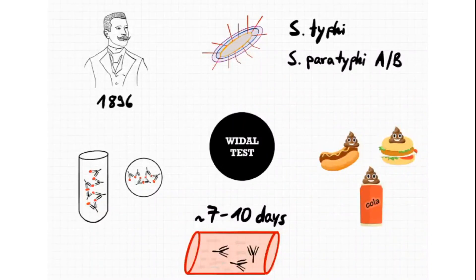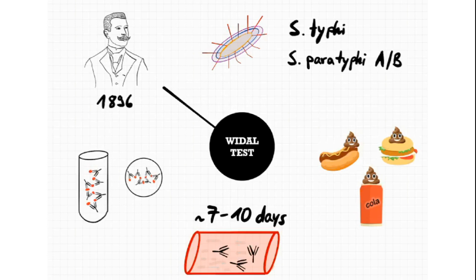The Widal test was developed by George Fernand Widal in 1896 and is a serological method to diagnose enteric fever, also called typhoid fever, which is a life-threatening disease. An infection is caused by pathogenic microorganisms like Salmonella typhi or Salmonella paratyphi A and B, which is a milder typhoid form. These microorganisms are transmitted to the human body through food and drinks contaminated with fecal matter via the fecal-oral route.